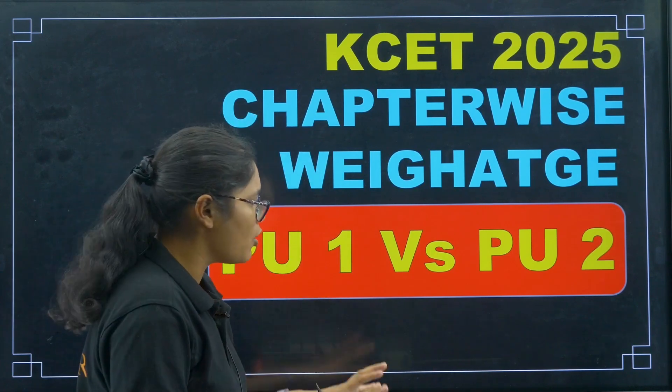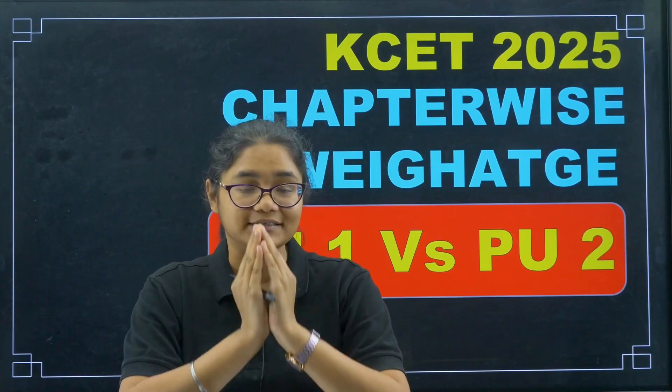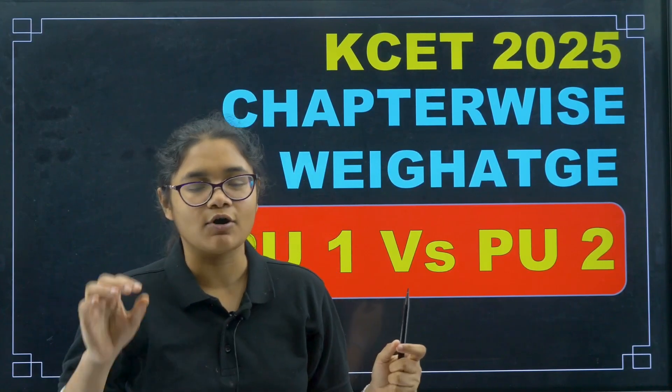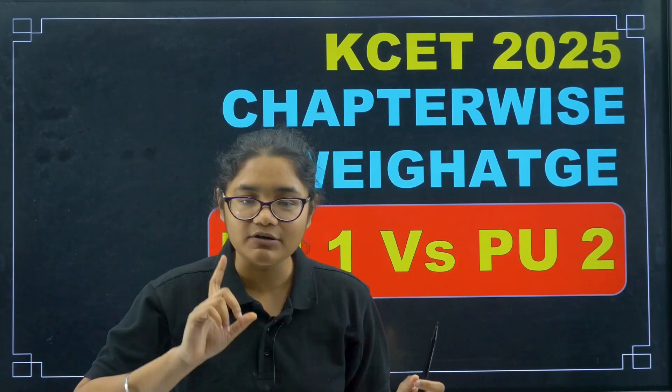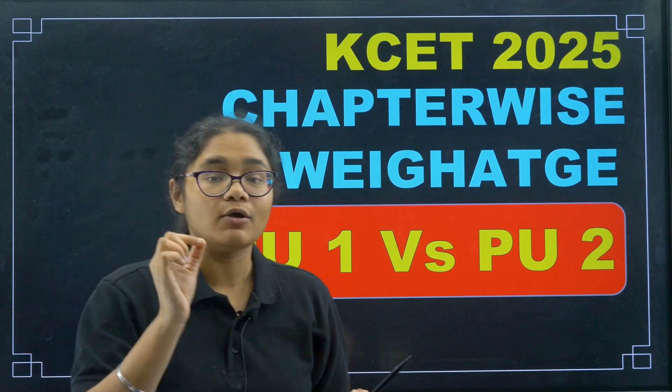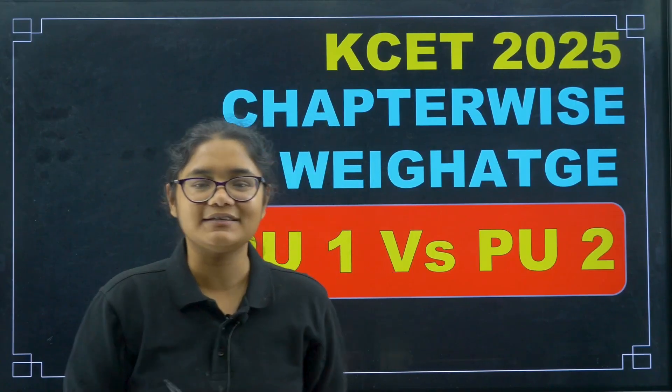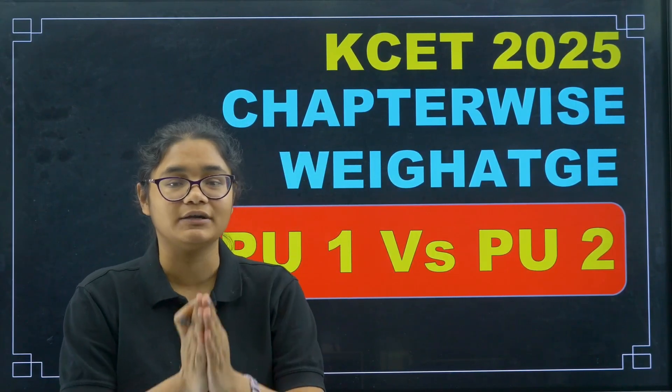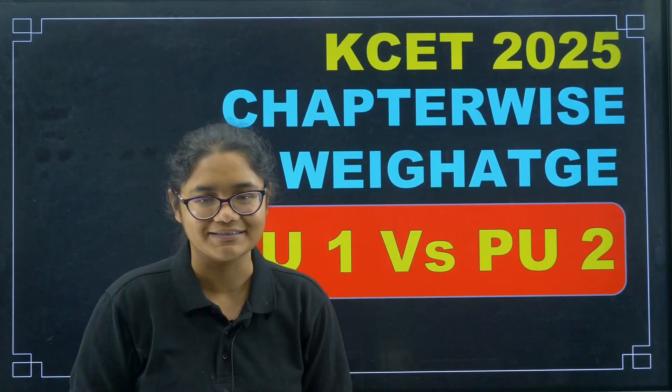For the KSA examination, we all know the syllabus is your PU1 and PU2 syllabus. But how much exactly from PU2 and how much from PU1 will be asked? I've received a lot of comments asking: if we do only PU2 is it enough? If I do both PU1 and PU2, is it enough? So in this video I've given a detailed analysis of PU1 and PU2 syllabus, and I'll also be telling you where to invest more time. This is a very important video — it will help you manage and divide your time efficiently between chapters.